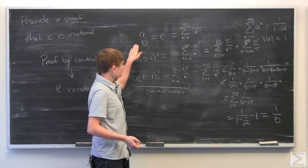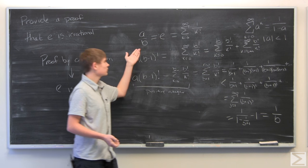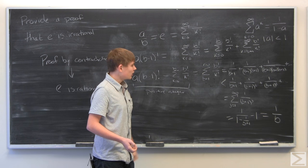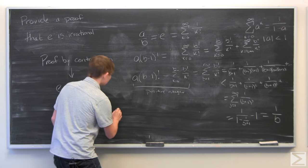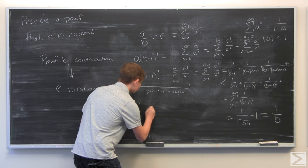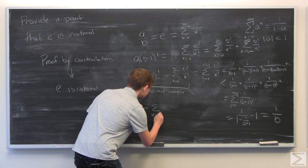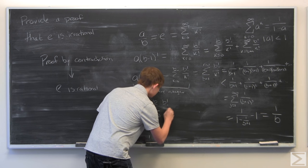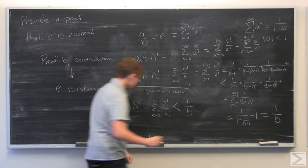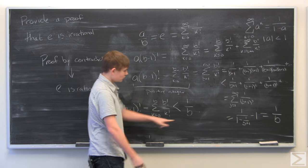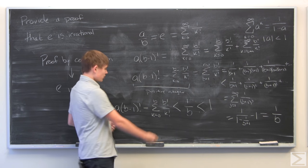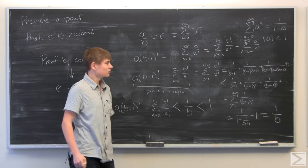And since b is an integer, we're going to assume that b is greater than 1, so that this is rational, which makes sense. Therefore, we have a positive integer on this side is less than 1 over b, which means that this is less than 1. And since there are no positive integers that are strictly less than 1, we have a contradiction.